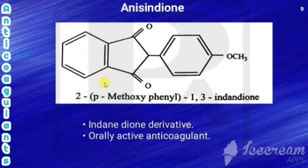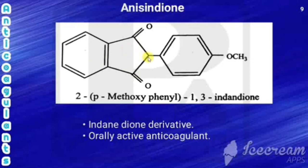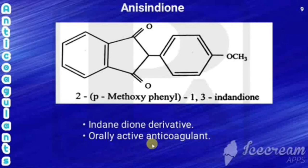The next drug is anisindione. Its structure has a benzene ring connected with a cyclopentane ring bearing two ketones, and another benzene ring attached with an OCH3 group. The fusion of cyclopentane with benzene is called indane, and having two ketones makes it indanedione. The ketones are at positions 1 and 3, so it is 1,3-indanedione. The second position is attached with a para-methoxyphenyl group. The chemical name is 2-(para-methoxyphenyl)-1,3-indanedione. It is an indanedione derivative and an orally active anticoagulant.